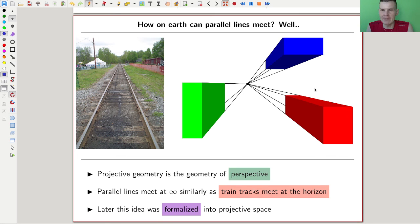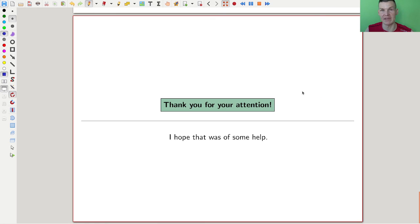So how on earth can parallel lines meet? Well, in the same way the two train tracks meet at the horizon, at the point at infinity, and this idea is actually then just formalized into what a projective space is.